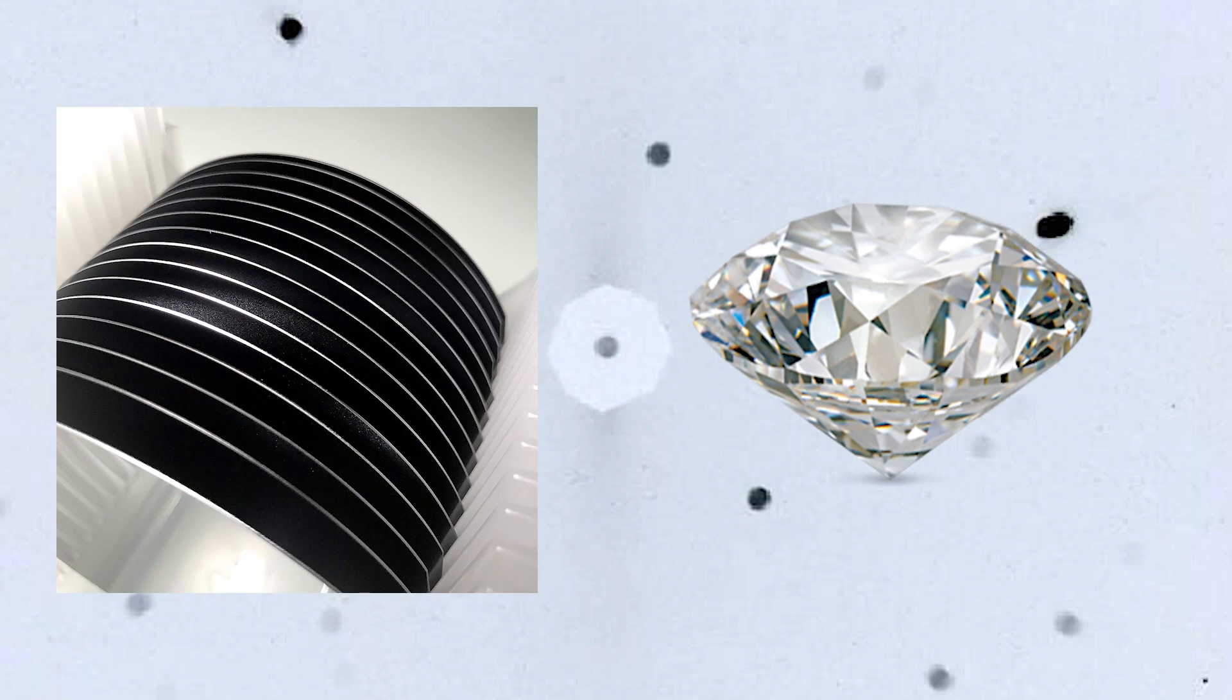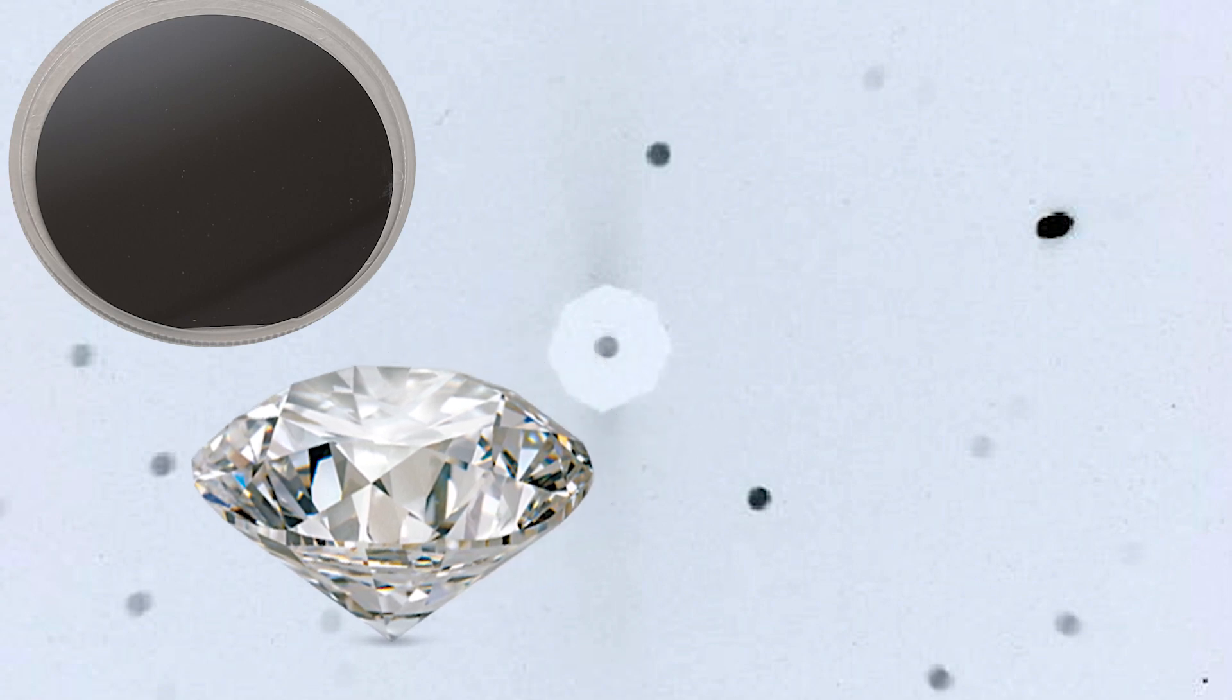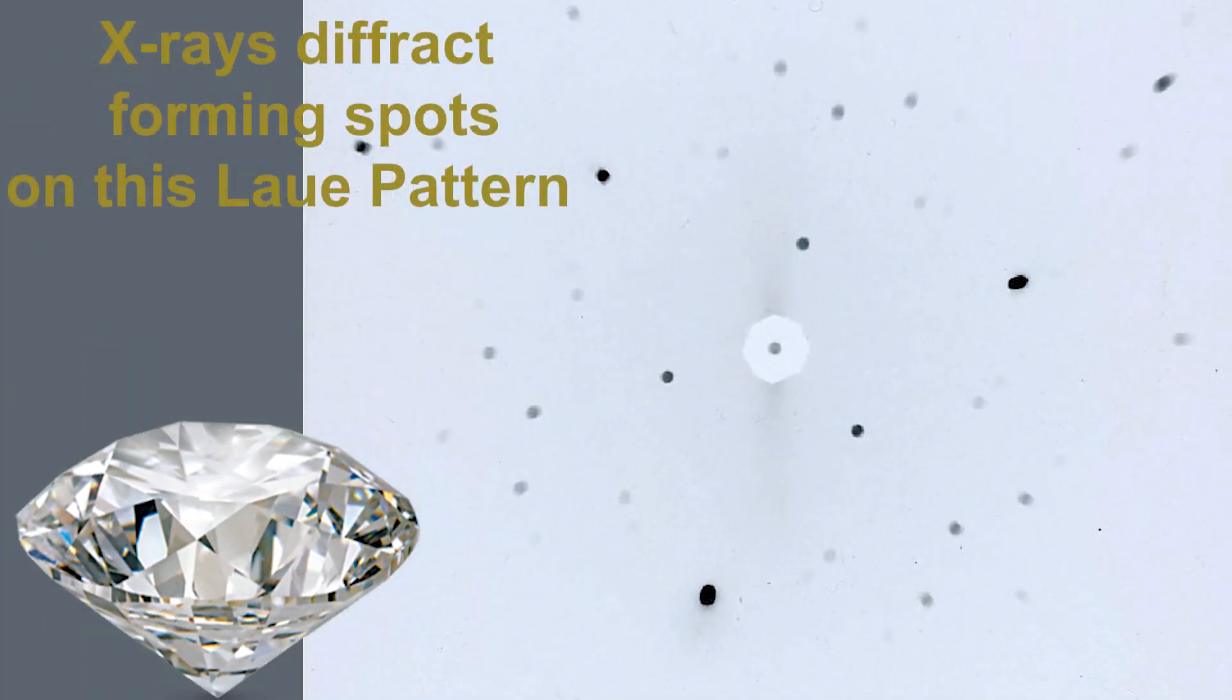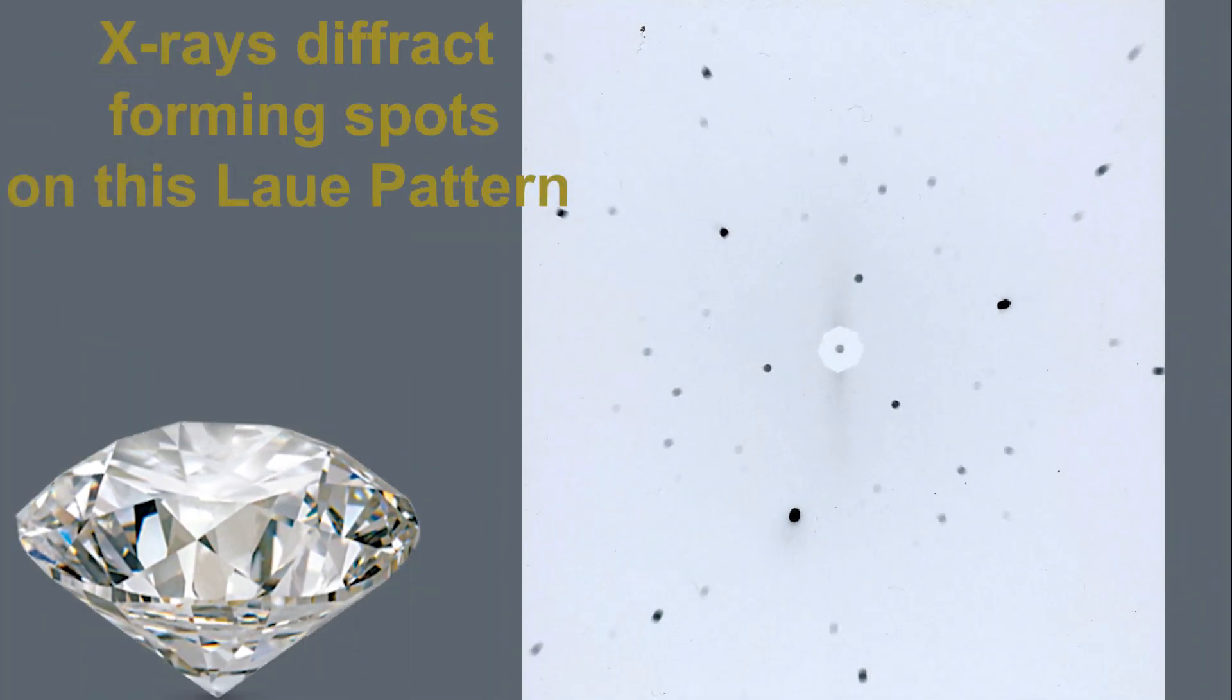Single crystals diffract X-rays in discrete directions. For a given X-ray wavelength, the location of the diffraction intensity depends on the orientation of the crystal, structure, and lattice parameters.